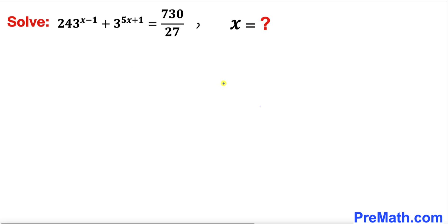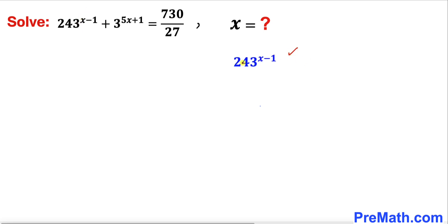Let's go ahead and get started with the solution. The very first thing we are going to do is focus on the first term 243 power x minus 1. Let's focus on the base 243, and we know that 243 is the same as 3 power 5.